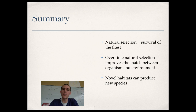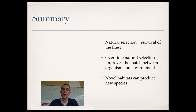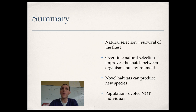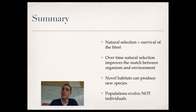Novel habitats can produce new species. If a natural disaster splits a population into two different climates or locations, natural selection goes back to work and over time one species can become two, each adapted to its new environment. Finally, and this is really important: populations evolve, not individuals. A beaver can't just decide it would be nice to have longer teeth — it won't grow them on the spot. Over time, beavers with the best teeth will pass those traits to their offspring, and the population as a whole will evolve the ability to chew down trees more effectively. Populations evolve, not individuals.